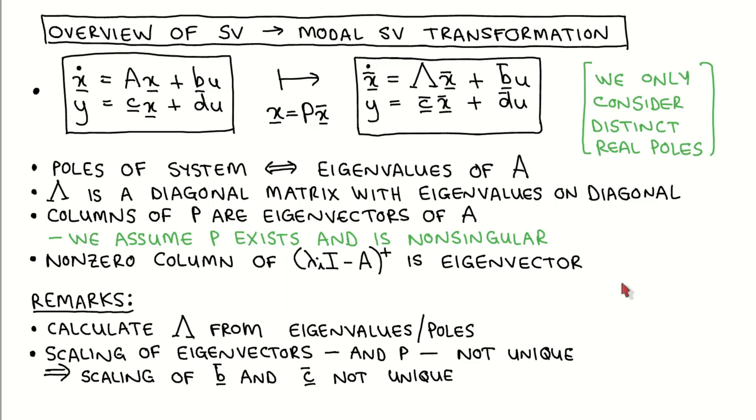With this overview in mind, let's conclude this page with a few remarks. Matrix capital lambda has the poles or eigenvalues of A on its diagonal.